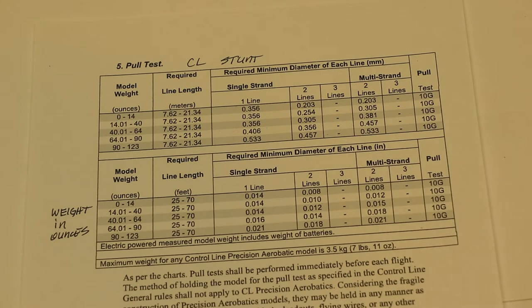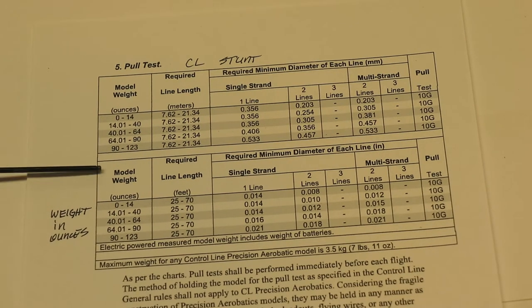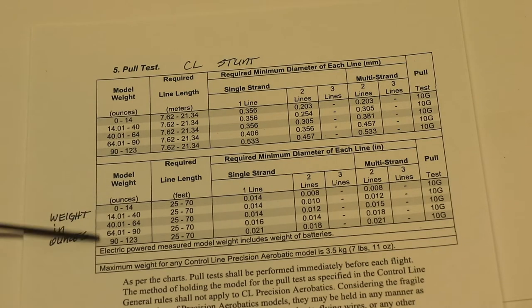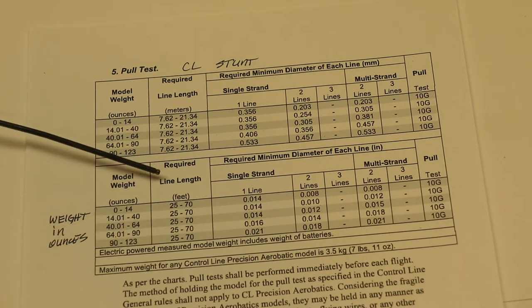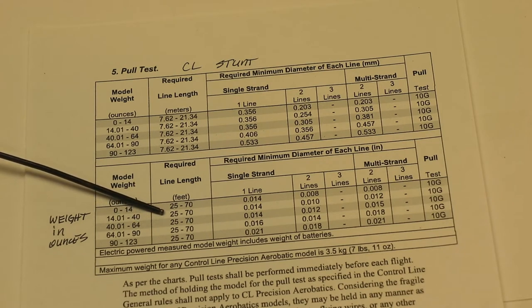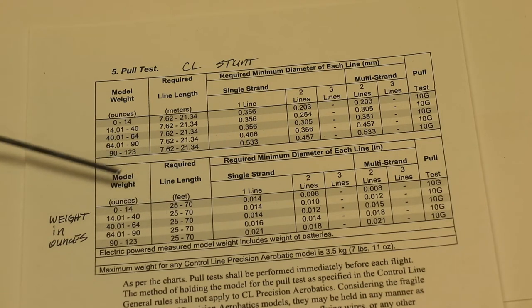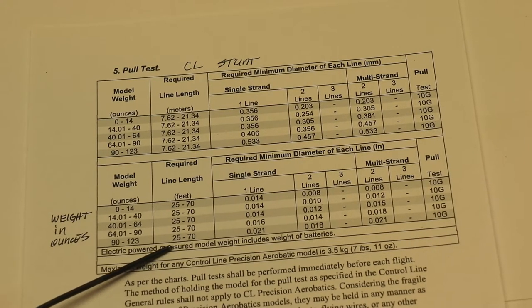Okay, one of the common questions that I get is what size line diameter do I need to use and how long are the lines? Well these are the AMA rules for control line stunt or precision aerobatics. They've identified the weight of the airplane in ounces and they tell you the range of the line length. So there's no exact length you have to be but you can't be longer than 70 feet but you have to be longer than 25 feet.